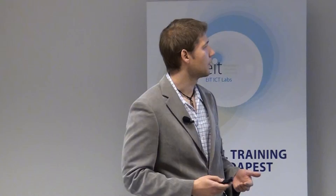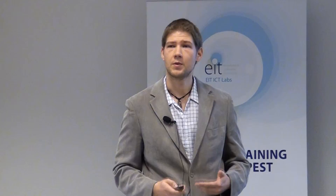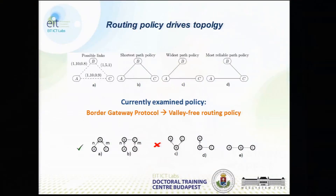Here is a small example of how routing policy can drive the topology. We have three nodes, among which we decide to create a network, and the characteristics of the passable edges are defined by a triplet: the latency, the bandwidth, and the reliability. We can see that according to the used routing policy, we get three different topologies. Picture B is for the shortest path policy, picture C is for the widest path, and picture D is for the most reliable path policy.